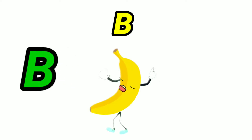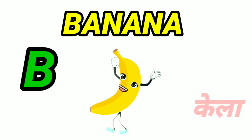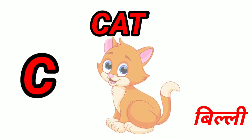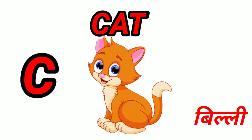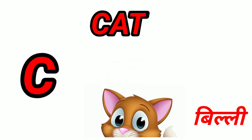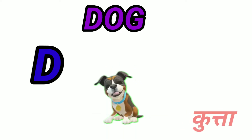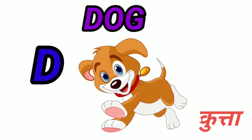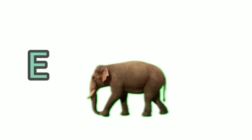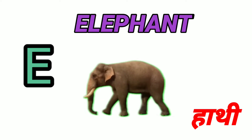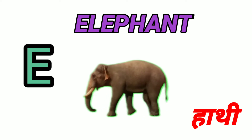B for Banana. Banana means Kela. C for Cat. Cat means Billy. D for Dog. Dog means Kutta. E for Elephant. Elephant means Hathi.